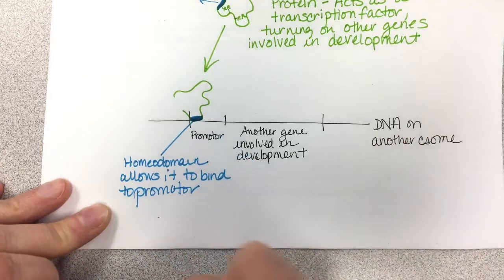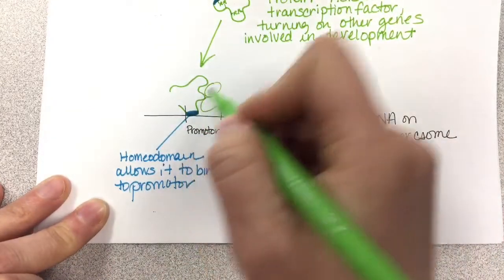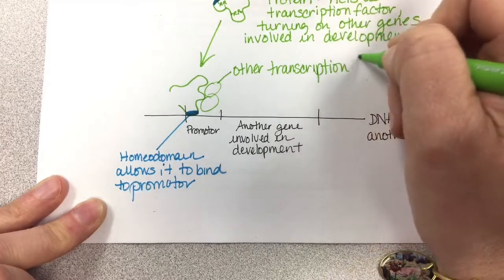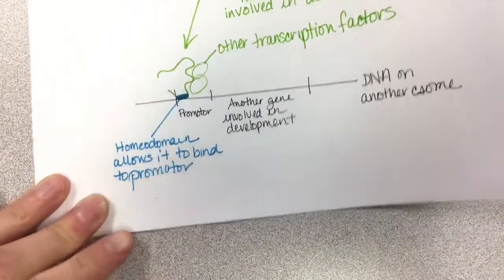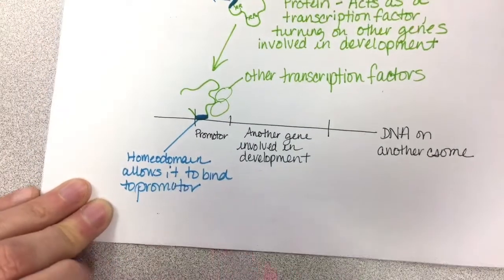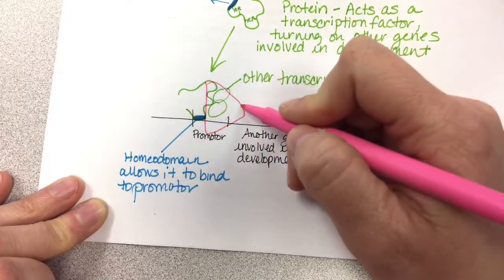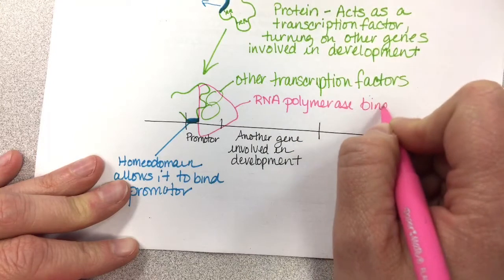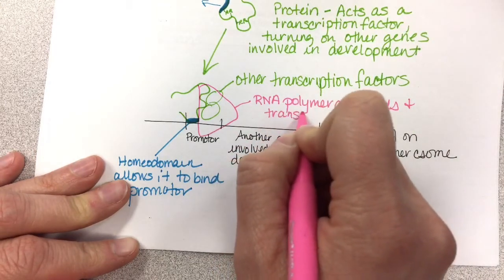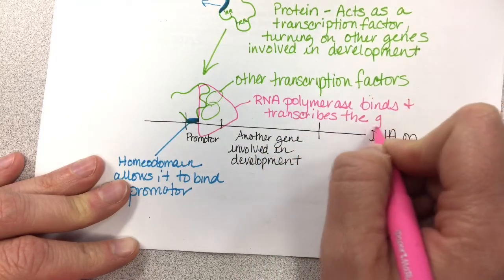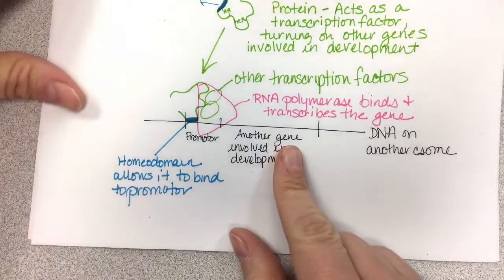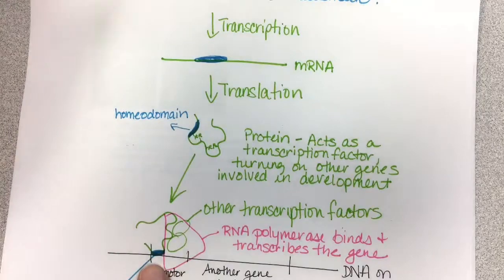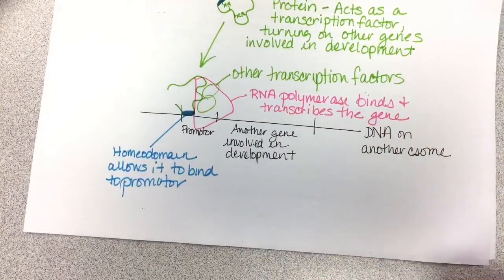That binding allows other transcription factors to come and bind. Eventually, what binds to start the whole process is RNA polymerase. RNA polymerase binds and transcribes the gene. Therefore, this homeotic gene makes a transcription factor, and that homeobox allows it to turn on other genes involved in development so that those genes can be turned on and so on and so forth.